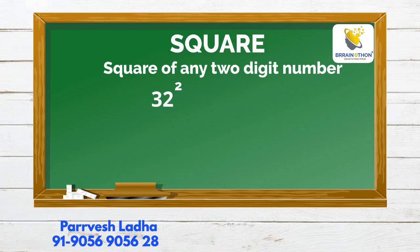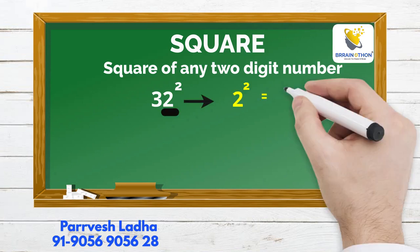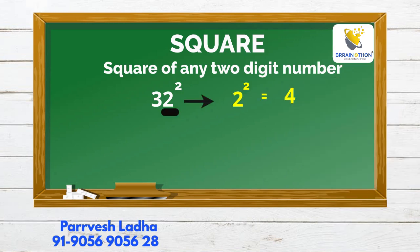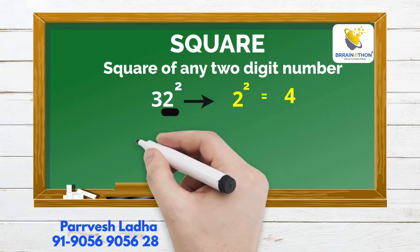We start with a new example: 32-squared. First, we square the units digit: 2-squared is 4. We write 4.